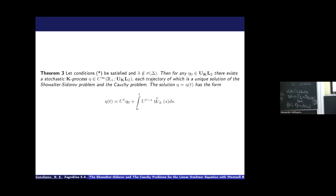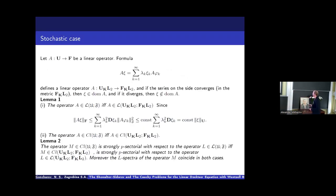And we obtain the main theorem. When we have the condition obtained earlier and λ does not belong to the spectrum of operator Λ, we have, for any K-process, a unique solution in terms where each trajectory is a unique solution of the Showalter-Sidorov and the Cauchy problem. We obtain this according to these statements. Thank you for your attention.